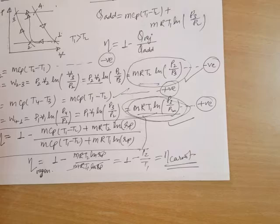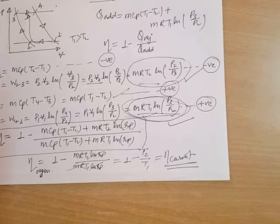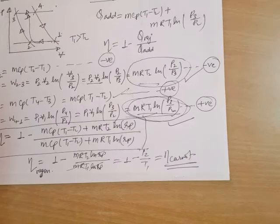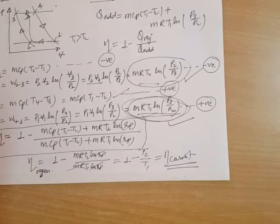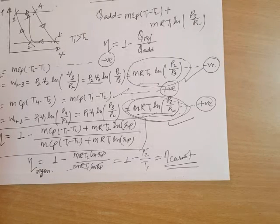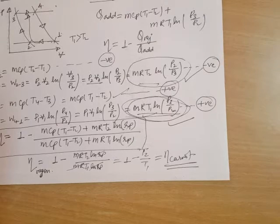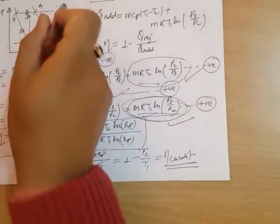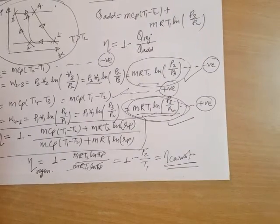An important point to remember: if you perform continuous regeneration of a Rankine cycle power plant with a very large number of stages — 50, 60, 70, 80, 90 stages — that cycle approaches the Stirling cycle. Whereas if you regenerate the Brayton cycle, the gas turbine cycle, with a very high regeneration rate, then that regenerative Brayton cycle will tend to look like the Ericsson cycle.